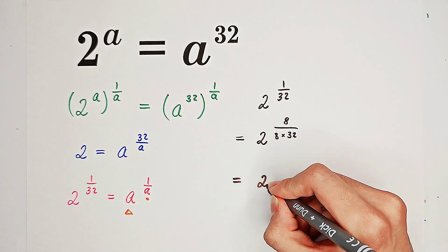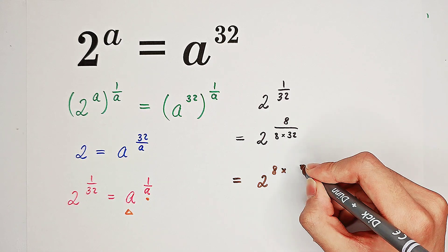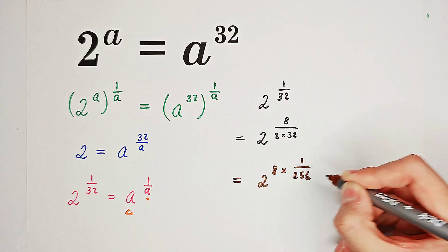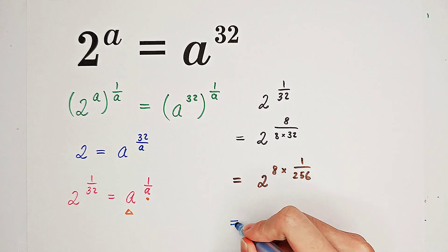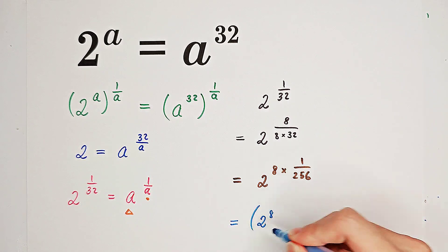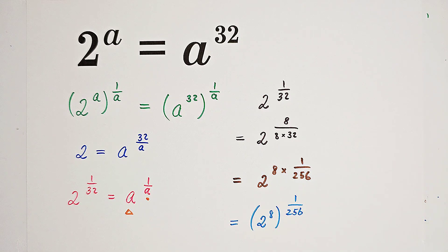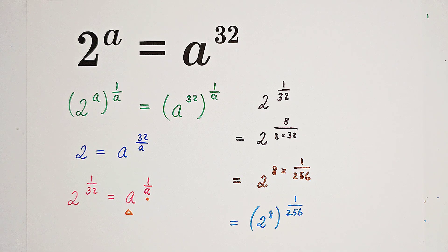So it is 2 to the power of 8 times... 8 times 32 is 1 over 256. This is, of course, 2 to the power of 8, all to the power of 1 over 256. And 2 to the power of 8 is 256.